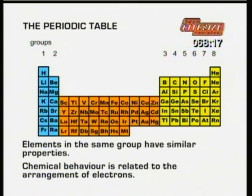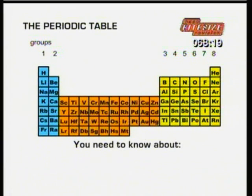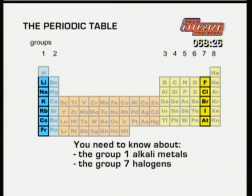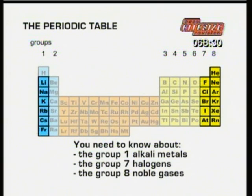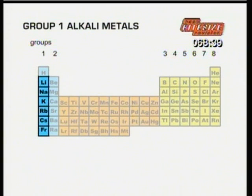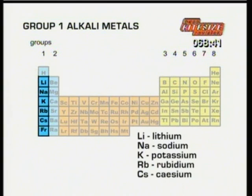Now we'll look at the parts of the periodic table you need to know about: the group 1 alkali metals, the group 7 halogens, and the group 8 noble gases. First, the group 1 alkali metals. Let's look at the pattern of chemical behaviour shown by these group 1 metals — lithium, sodium, potassium, rubidium and caesium.